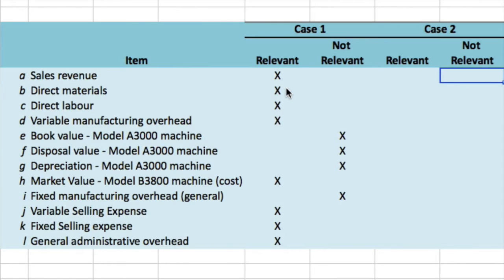Now let's look at Case 2. The old model A3000 machine is not the company's constraint, but management is considering replacing it with the new B3800 — not just adding it, but replacing it — because of potential savings in direct materials cost with the new machine. The model A3000 would be sold. This change would have no effect on production or sales other than some savings in direct materials due to less waste.